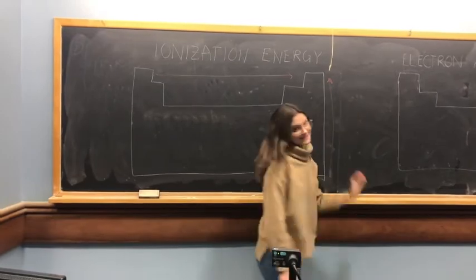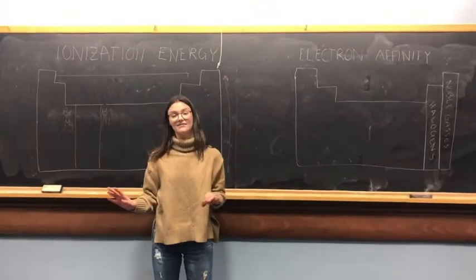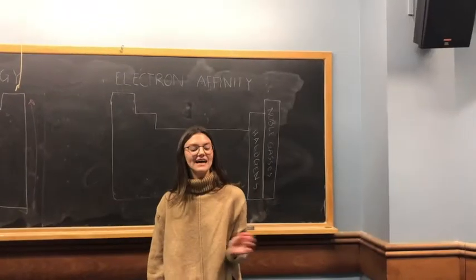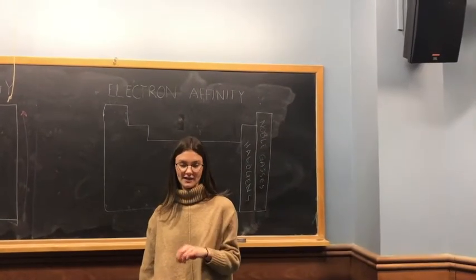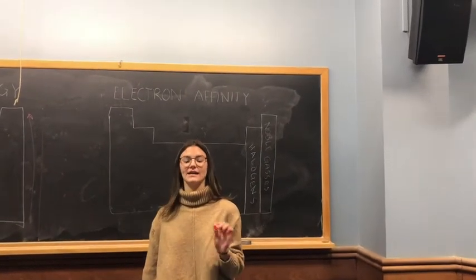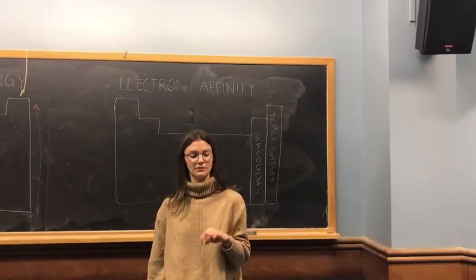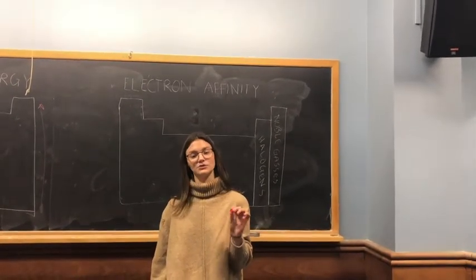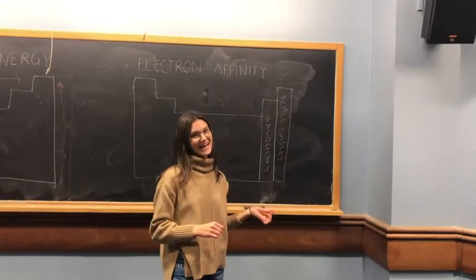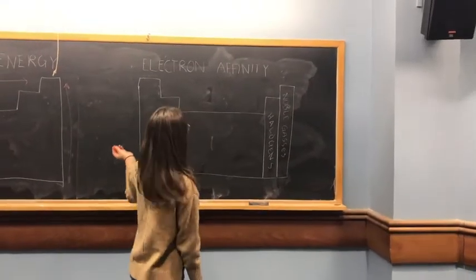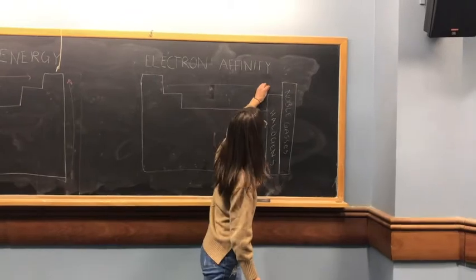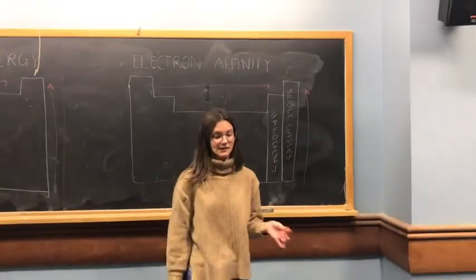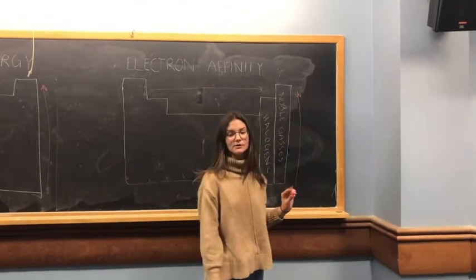The other side of ionization energy is electron affinity — the change in energy when one mole of electrons is added to one mole of an atom to form a monatomic anion, measured in kilojoules per mole. Just like ionization energy, the electron affinity trend moves from left to right and from bottom to top on the periodic table. However, halogens in Group 17 have the most negative electron affinity of their rows, disrupting the left-to-right trend.